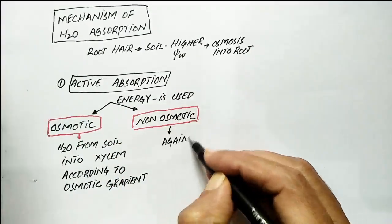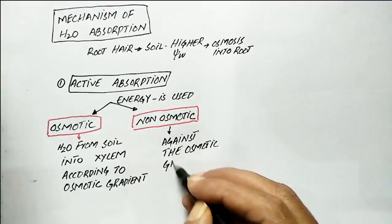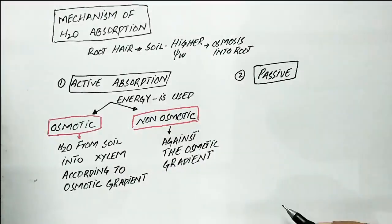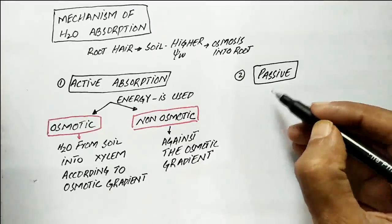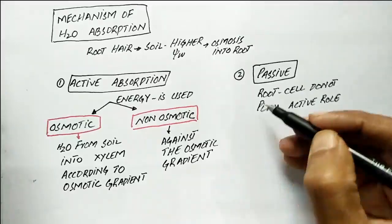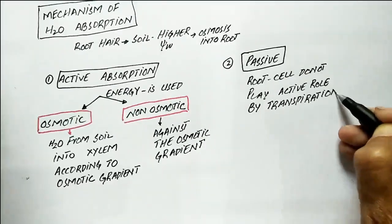When water is absorbed against the osmotic gradient. In passive absorption of water, it is due to transpiration. The root cells do not play an active role and remain passive, and water moves from area of higher concentration to lower concentration.